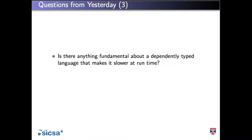Is there anything fundamental about dependently typed languages that makes them slower at runtime? Nothing fundamental. You do have to do a bit of work — sometimes things appear in types that don't need to be there at runtime but creep into the program. You might have a predicate on a value needed to show another value has a particular form, so you have two parts of the program fulfilling the same computational role. You need to erase unnecessary data, but once you've done that you're essentially down to untyped lambda calculus and can use all the same well-known techniques.